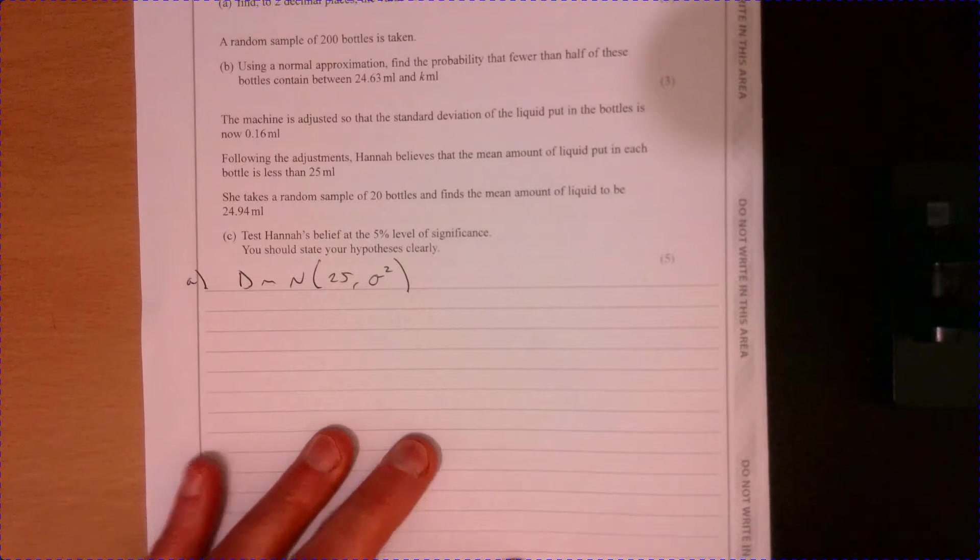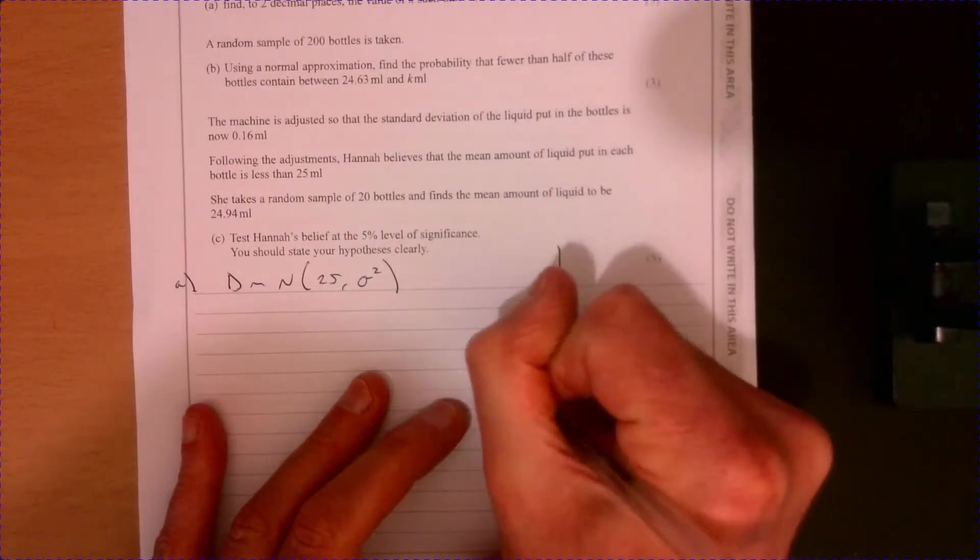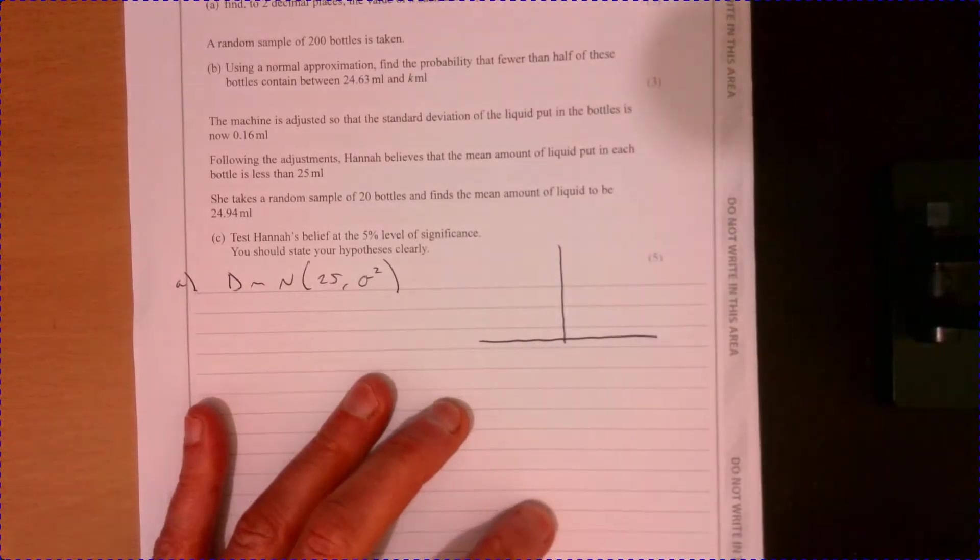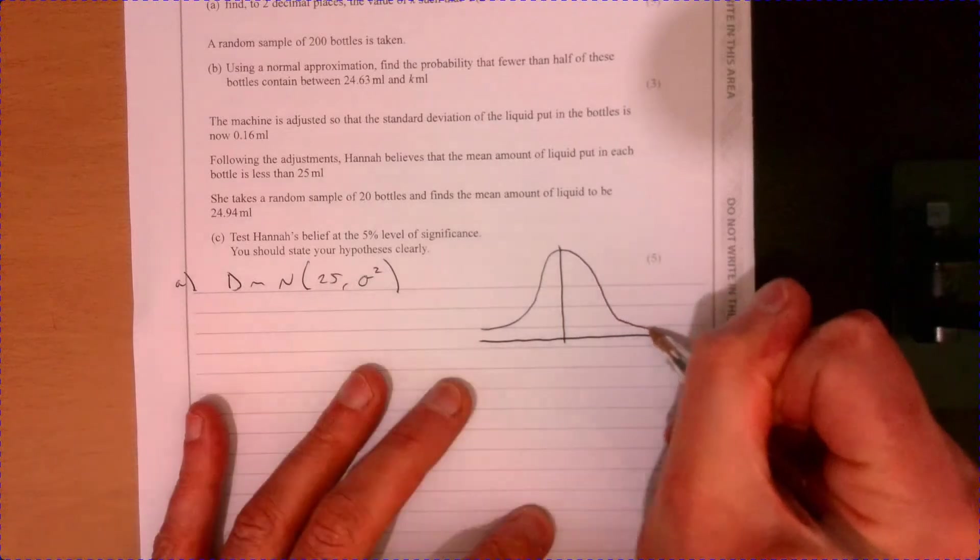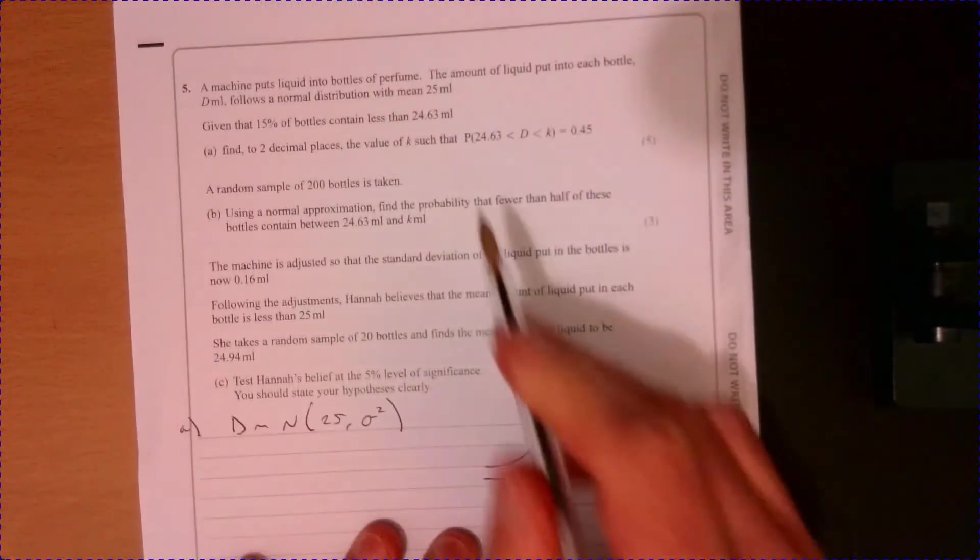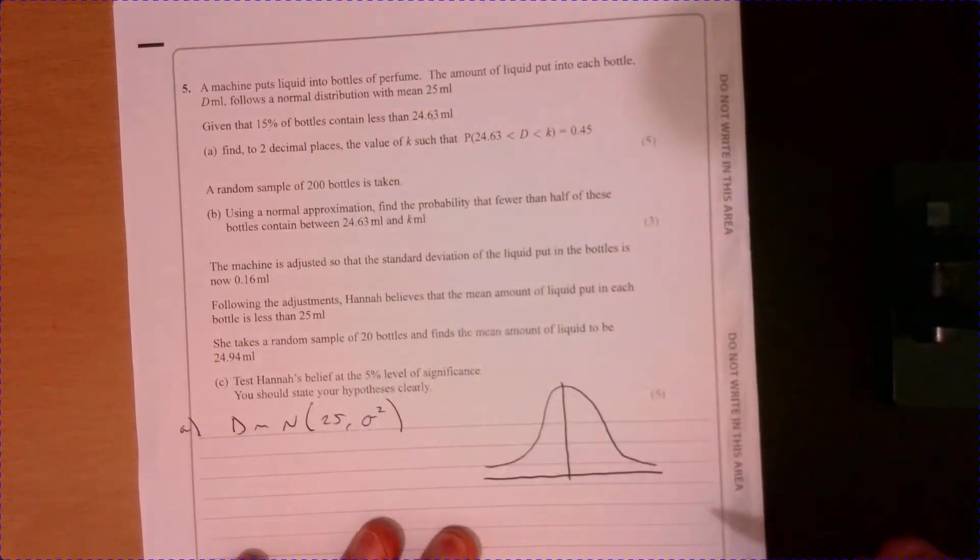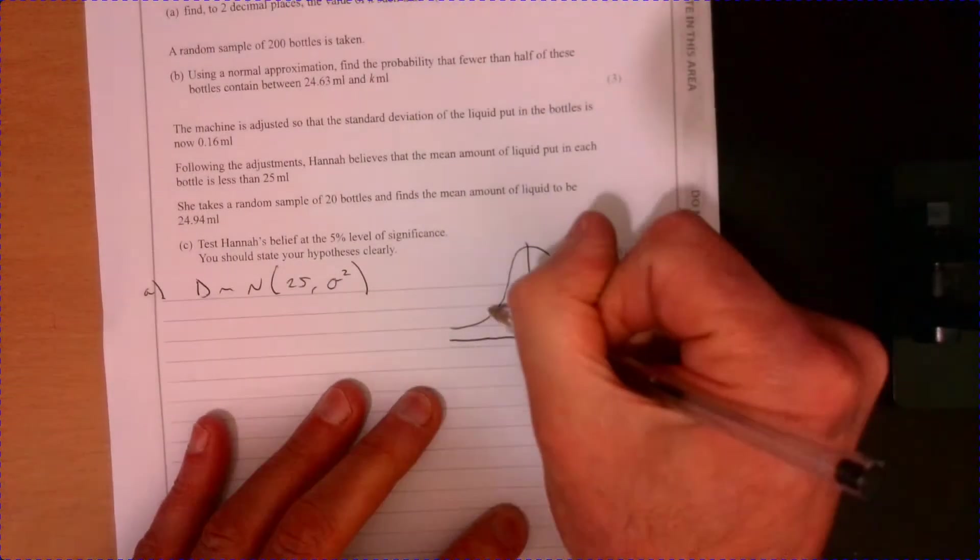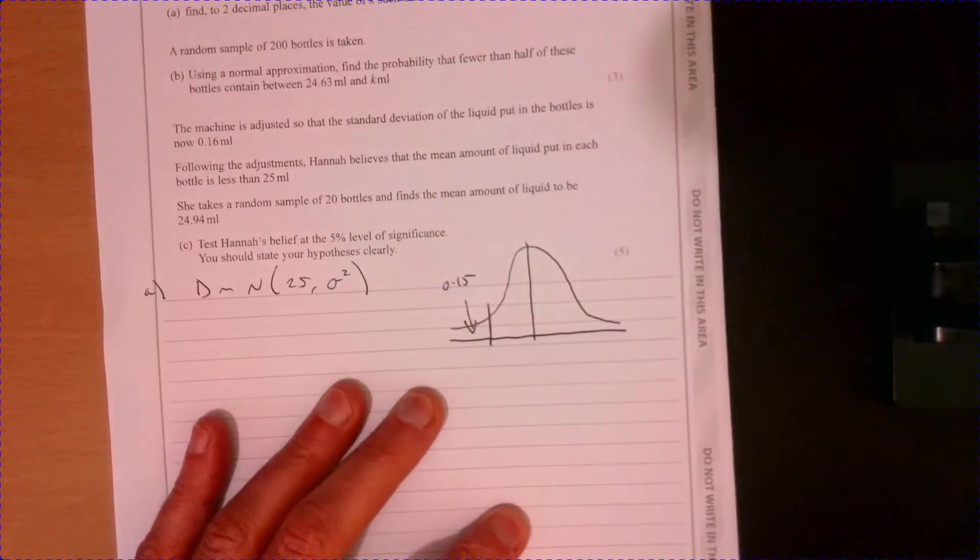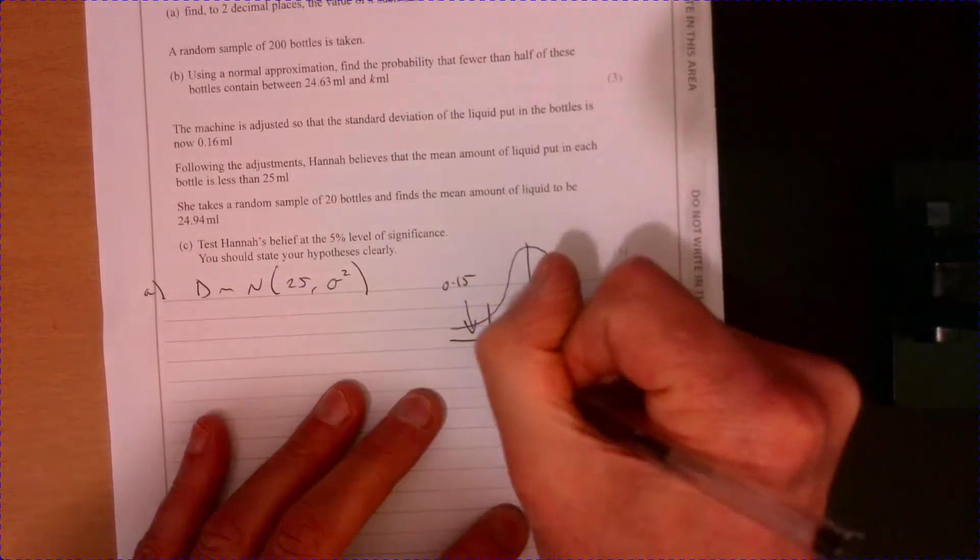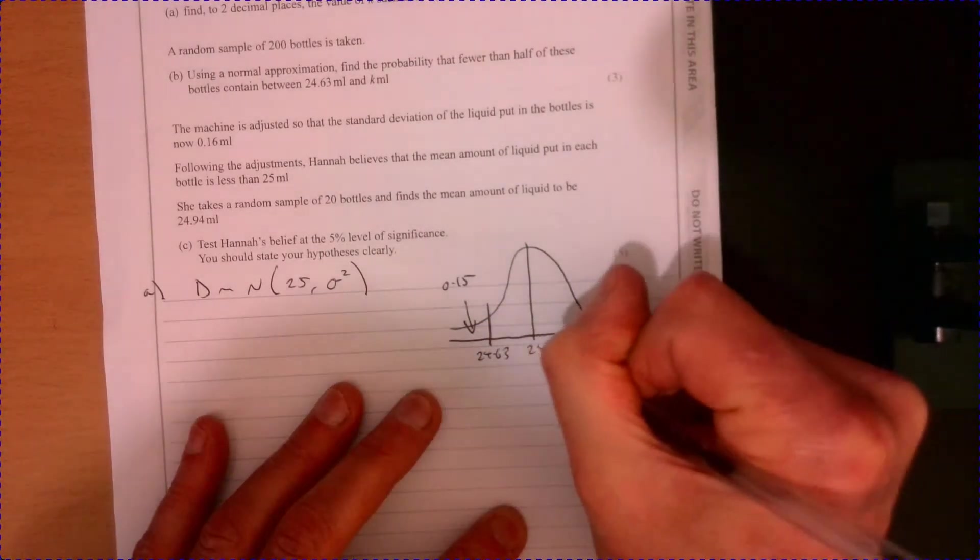But we're told some information in a different way. Let's summarize what we've got. I would always draw myself a little diagram here. So what are we actually told? We're told in the information in the question: given 15 percent of bottles contain less than 24.63. So we're told 0.15, and we're told that this figure is 24.63. We know that this is 25.